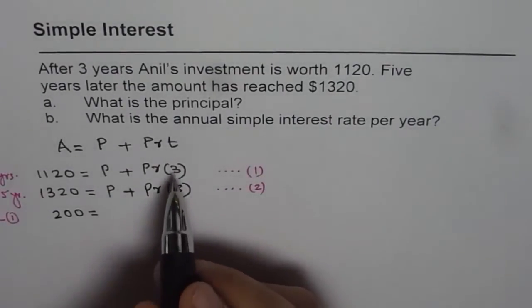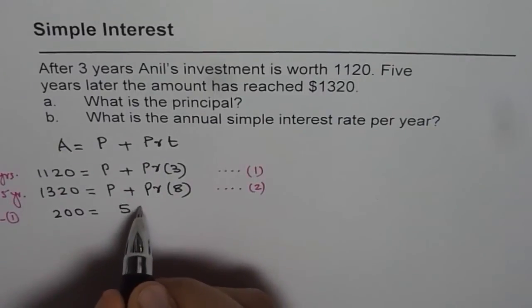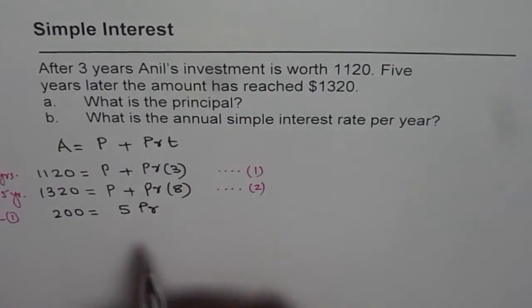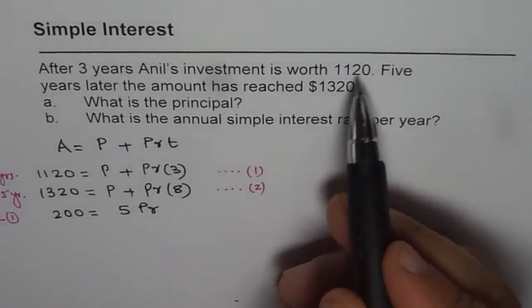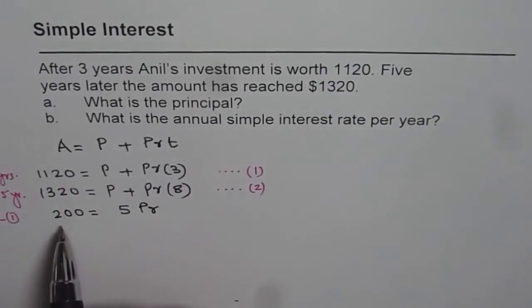And eight minus three is five, five times PR. Well, that makes sense. So after five years there is an increase of $200. So that is the interest earned in five years.